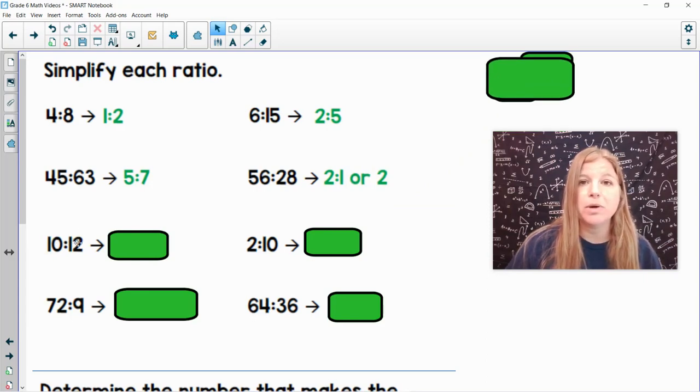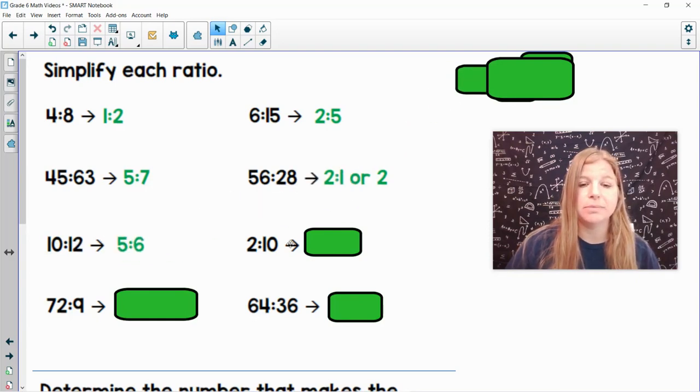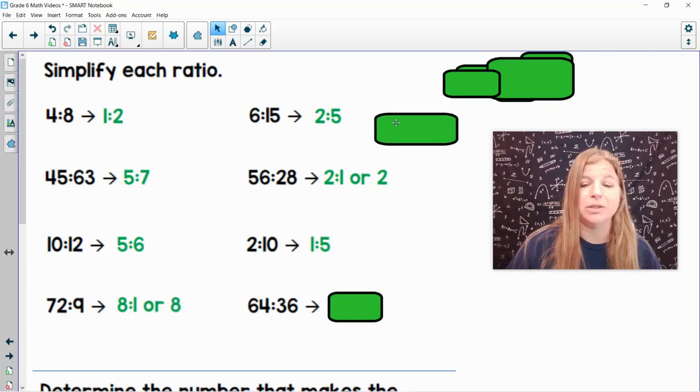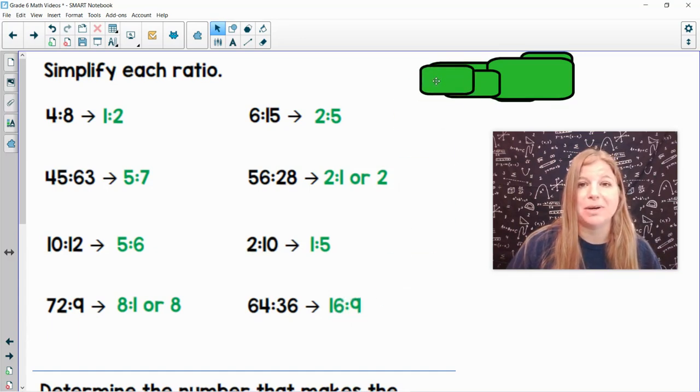10 to 12, they're both divisible by 2. That would give me 5 to 6. 2 to 10, they're both divisible by 2. That would give me 1 to 5. 72 to 9, both divisible by 9. That would give me 8 to 1, or just 8. And then 64 to 36. They're both divisible by 4, and that would give me 16 to 9. So that's just simplifying, and each one of these is then a pair of equivalent ratios.